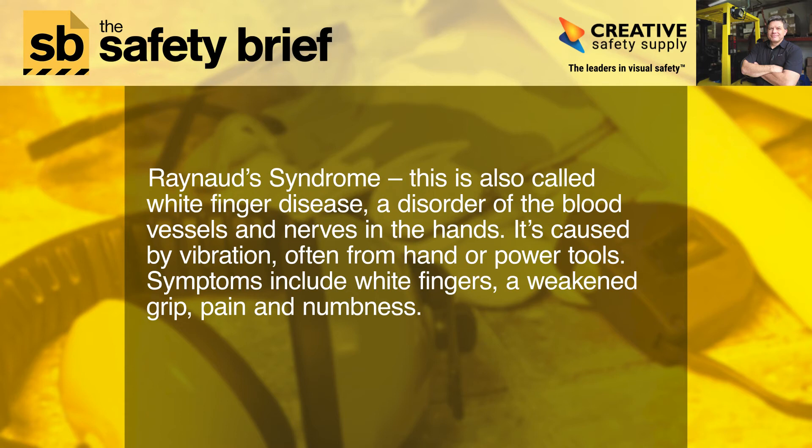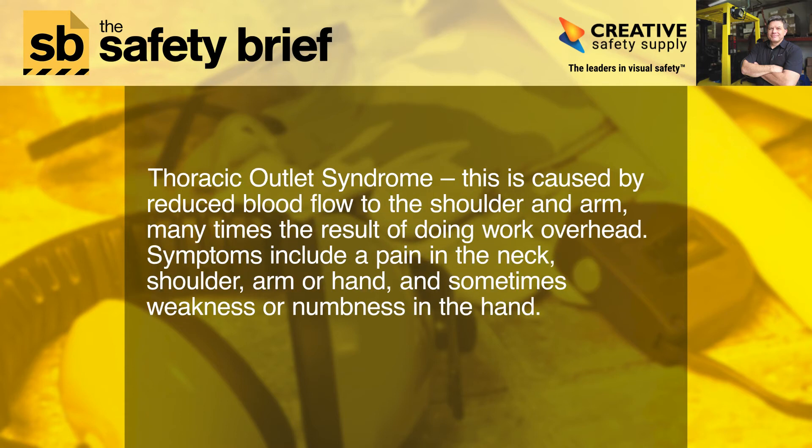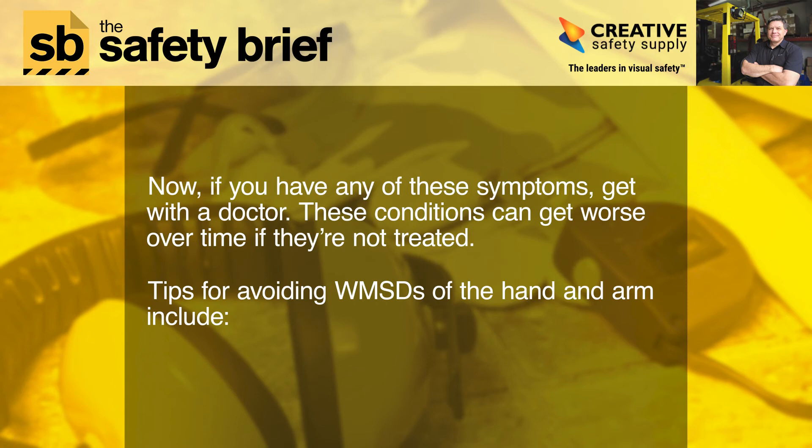Thoracic outlet syndrome is caused by reduced blood flow to the shoulder and arm, many times the result of doing work overhead. Symptoms include pain in the neck, shoulder, arm, or hand, and sometimes weakness or numbness in the hand. If you have any of these symptoms, get with a doctor — these conditions can get worse over time if they're not treated.